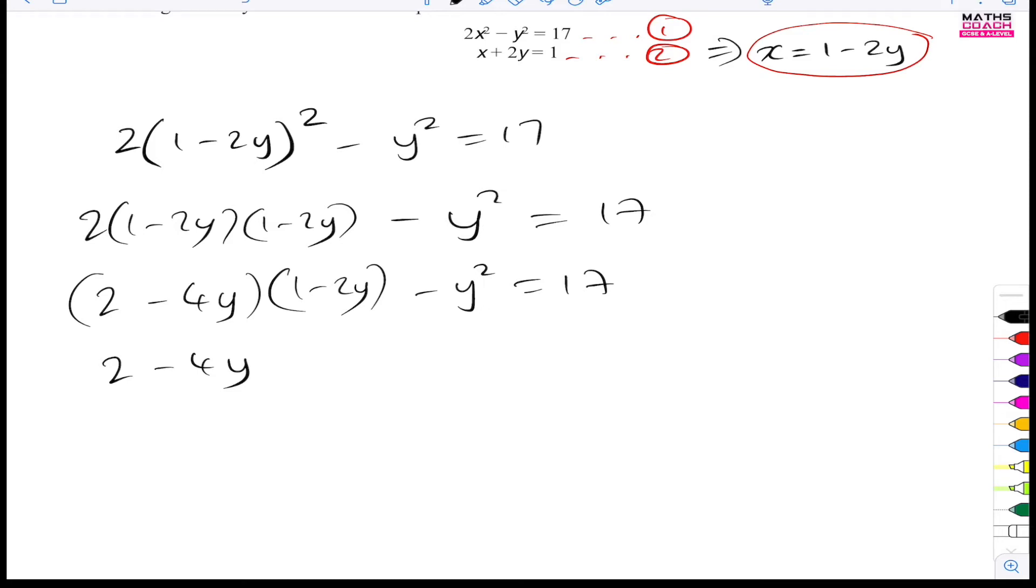And then you have minus 4y times by one, which is minus 4y again. And then minus 4y times by minus 2y is a positive, a positive 8y squared. And then I write all of this along. So minus y squared is equal to 17.